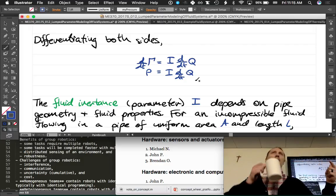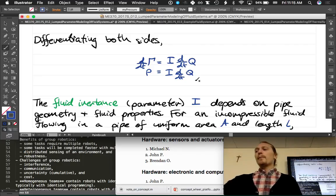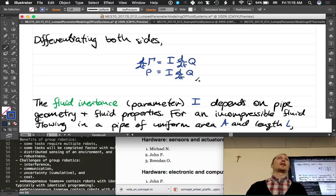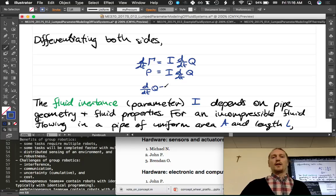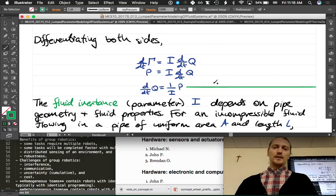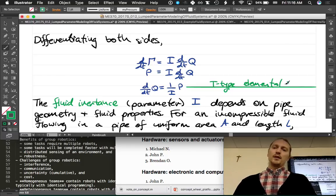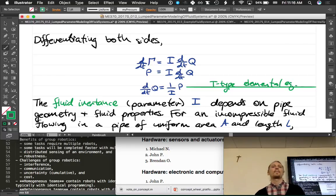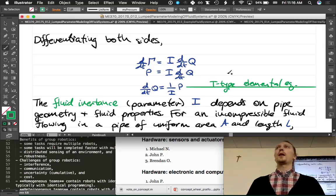What about i? What is that? It's a constant parameter. So this is our elemental equation. We have it. We often write it the other way, that d/dt q is equal to 1 over i times p. This is the T-type elemental equation.